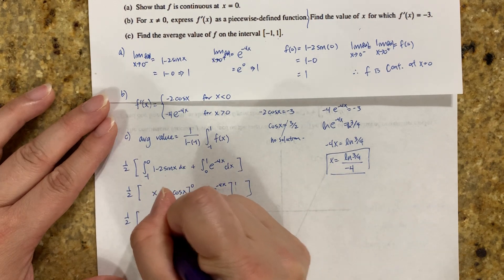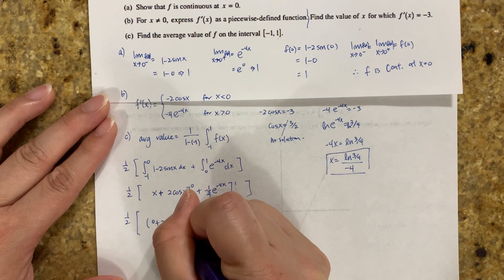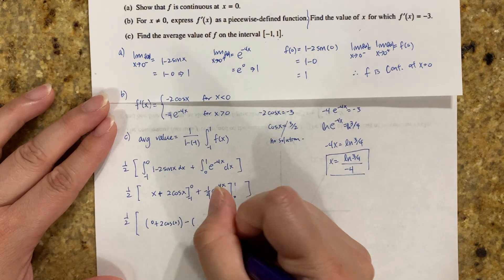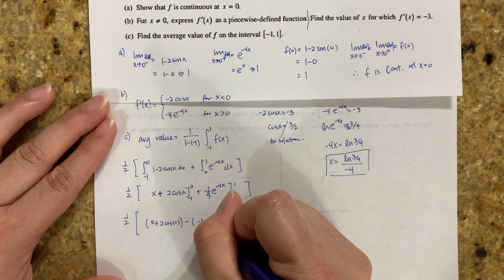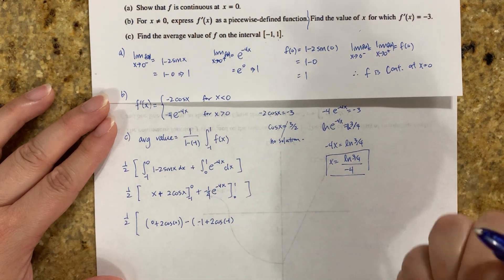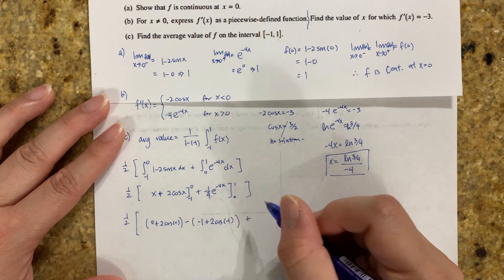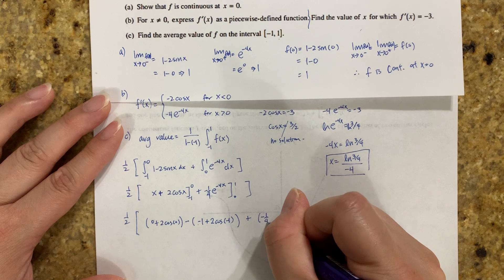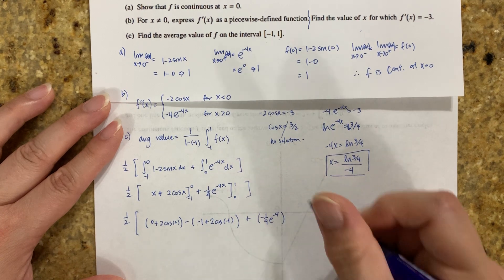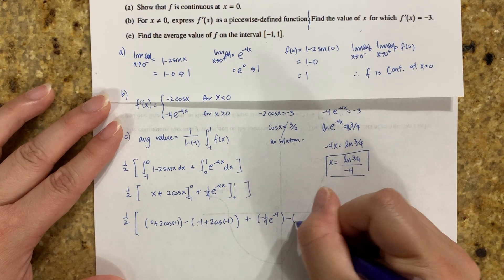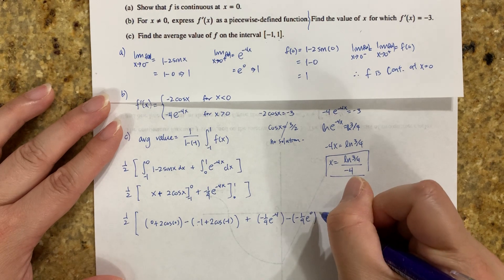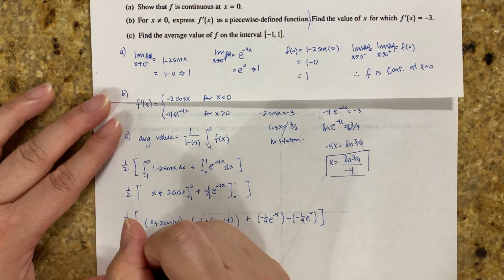Plug in 0: 0 + 2cos(0) minus (-1 + 2cos(-1)). Then plug in 1: -1/4 times e^(-4) minus -1/4 times e^0.